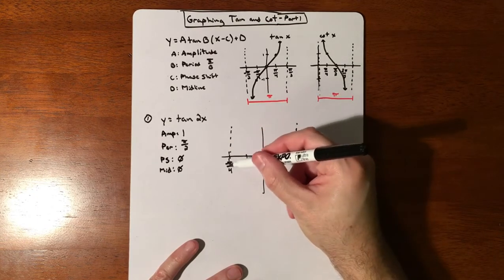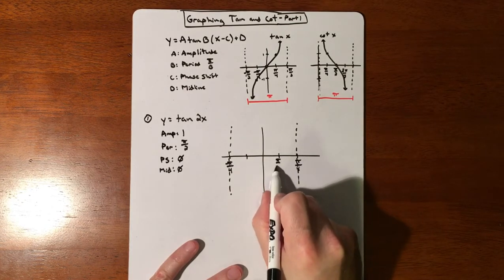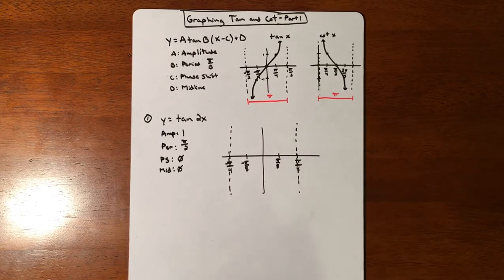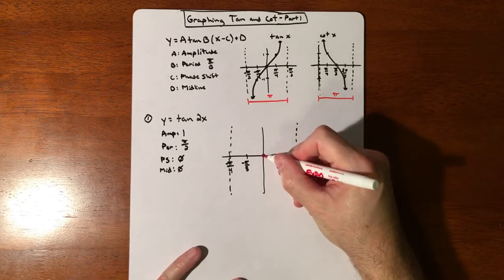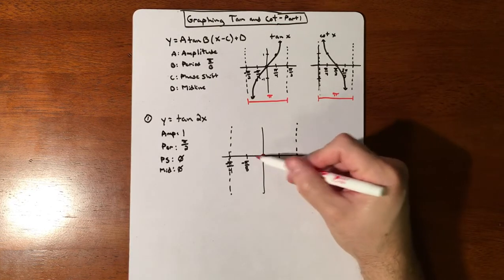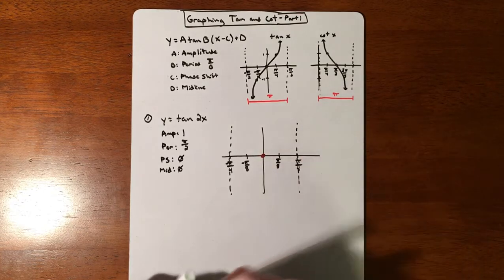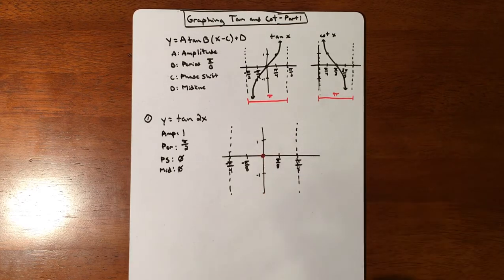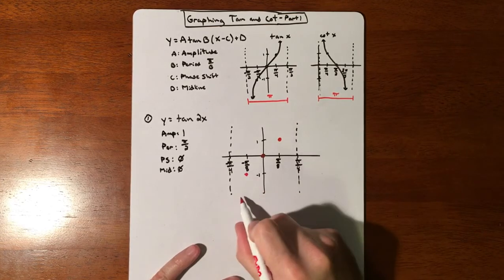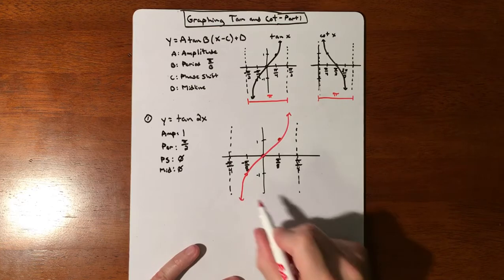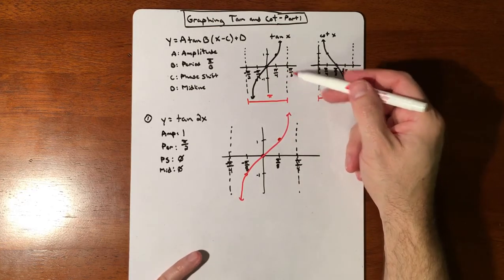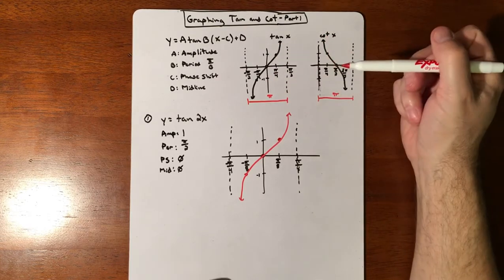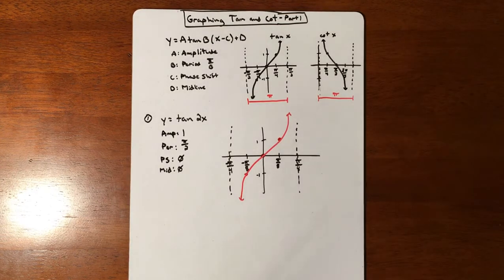Tangent goes asymptote to asymptote. Pi over 4 cut in half is pi over 8, and negative pi over 8 on the other side. There's no left/right or up/down shift, so the center stays at the origin. With no special amplitude, my main points are at 1 and negative 1. So the tangent graph looks essentially identical to the basic tangent — the difference is just the scale: this goes to pi over 2 where the basic goes to pi over 4, so the whole graph fits into a narrower window because of the shorter period.